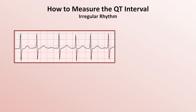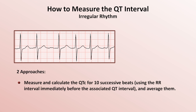What about measuring the QT interval when the rhythm is irregular, since the QT is dependent upon the preceding RR interval? There are two approaches discussed in the literature. The first is to measure and calculate the QTc for 10 successive beats using the RR interval immediately before the associated QT interval and averaging them — this is unreasonably time consuming for typical clinical practice. In the second approach, one measures and calculates the QTc for the QT intervals immediately following the longest and shortest RR intervals on the EKG. So for this example, the longest RR interval is 680 ms with an associated QT interval of 380, giving a QTc of 460 using Bazett's formula. The shortest RR interval is 470 and its associated QT interval is 340 for a QTc of 496. Averaging these together, we get an overall QTc of 478.